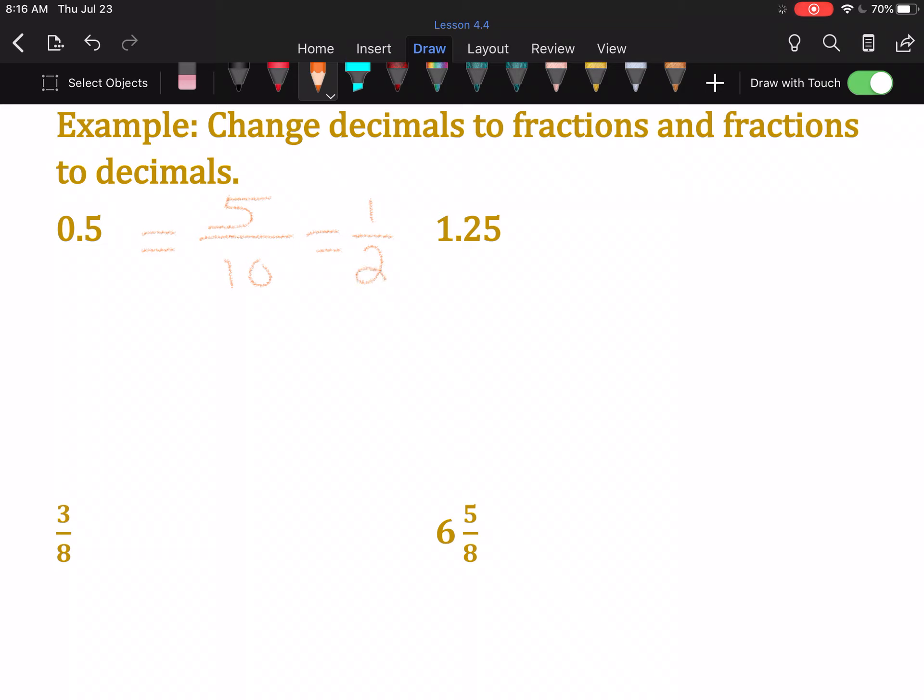Next up, we have 1.25: one and twenty-five hundredths. The second place is called the hundredths. So, one and twenty-five hundredths. Any decimal that has a number before the decimal point will be a mixed fraction.